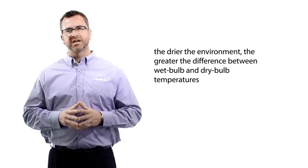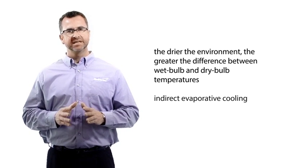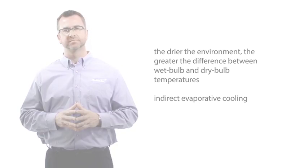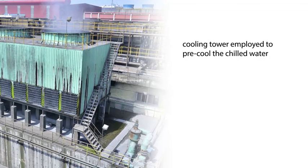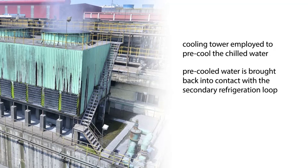Water-side economization is essentially indirect evaporative cooling. The cooling tower in a water-chilled system is employed to pre-cool the chilled water to nearly the wet bulb temperature of the air. That pre-cooled water is then brought back into contact with the secondary refrigeration loop within the facility.